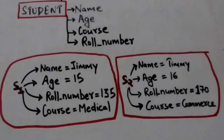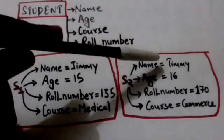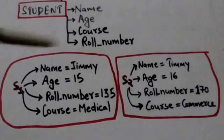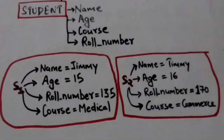Now there is another student entity s2. Value of its name attribute is Timmy, value of its age attribute is 16, value of its roll number attribute is 170, and value of its course attribute is commerce. Thank you very much.